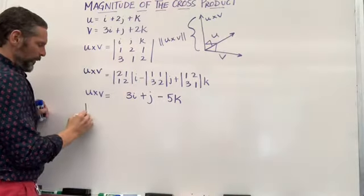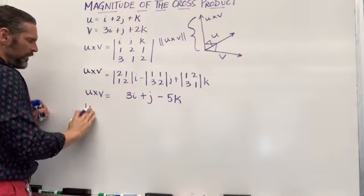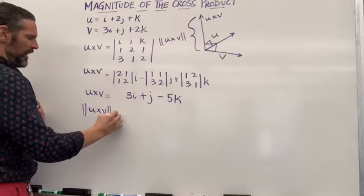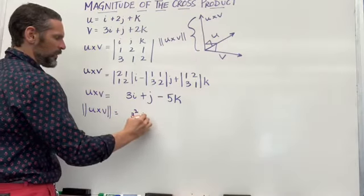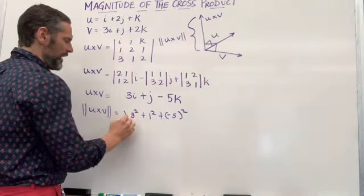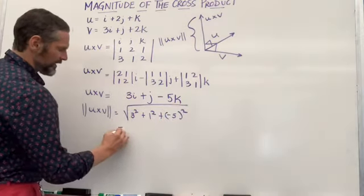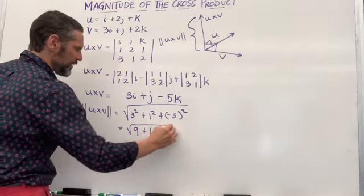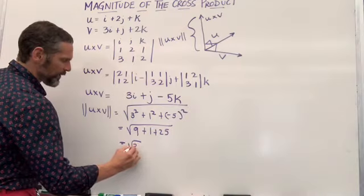So if I want to go now to the magnitude of vector u cross v, I'll take 3 squared plus 1 squared plus negative 5 squared and take the square root of that to give me the square root of 9 plus 1 plus 25. So I'm going to get the square root of 35.